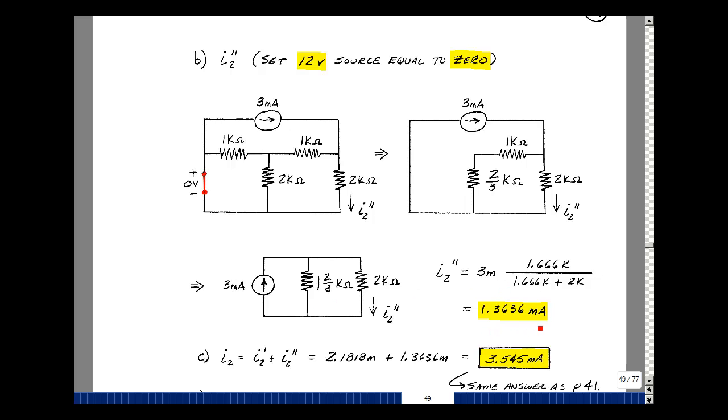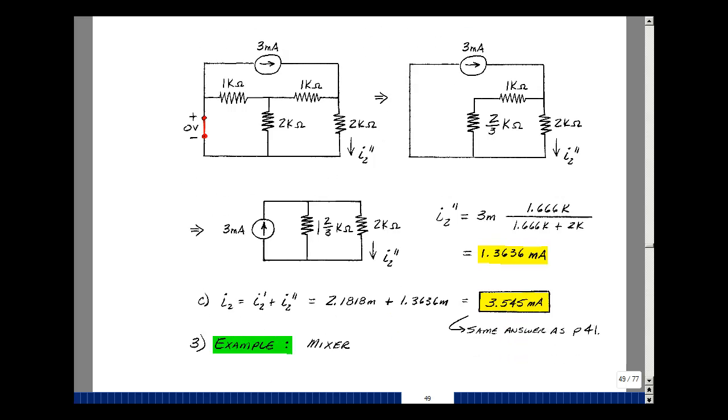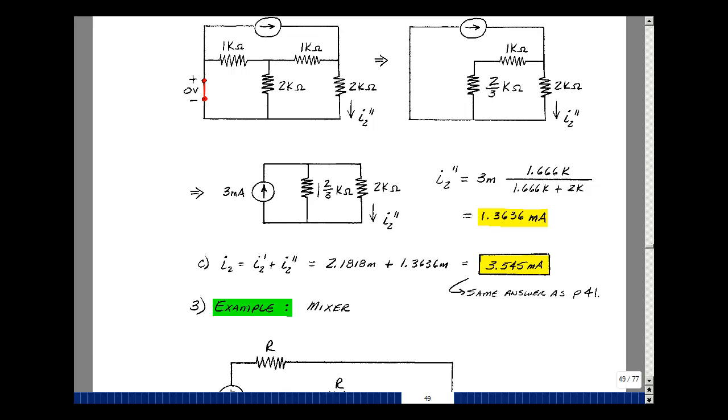Now adding that together with the last result, we get 3.545 milliamps, and that was the same answer we had when we solved for the mesh currents on page 41.